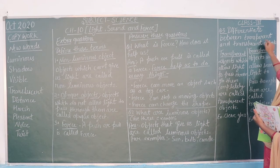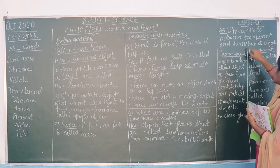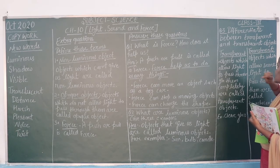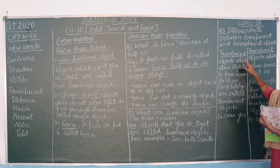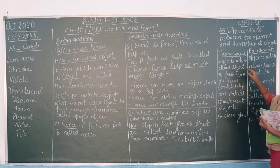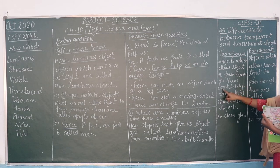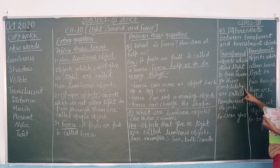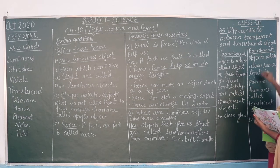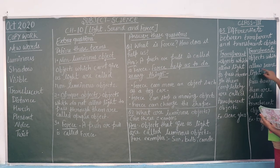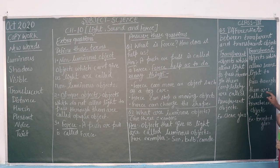We also looked at transparent and opaque objects. A transparent object is an object which allows light to pass through it completely. A transparent object allows sunlight to pass through it.